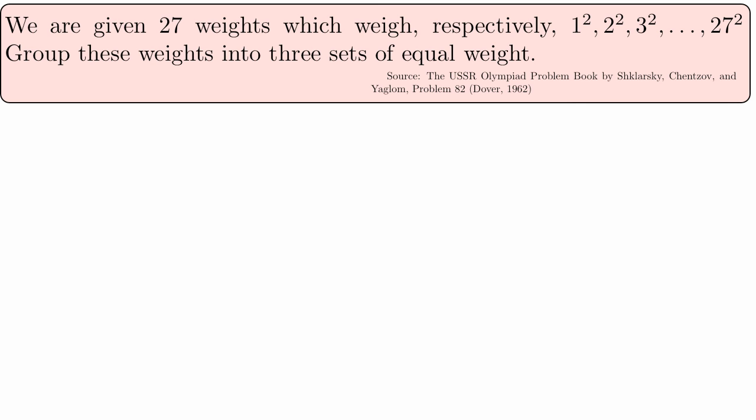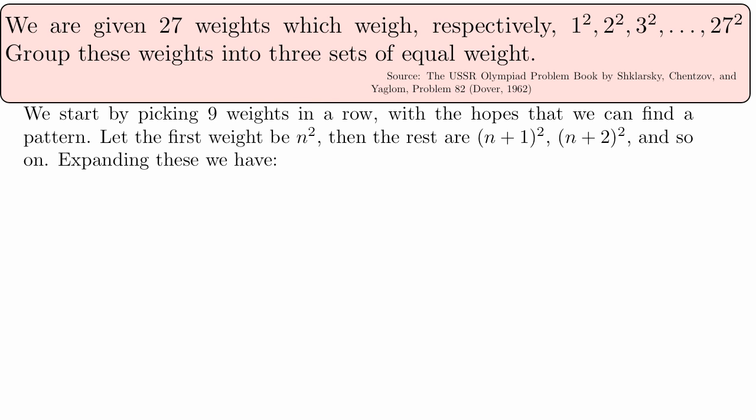Hopefully you tried a few ideas, maybe you even got it. But here's one solution. The basic strategy is we're going to try to simplify the problem by looking at only 9 weights in a row rather than 27 weights. Maybe we'll find a way to group those 9 weights into 3 equal sets, but maybe we'll also find some useful patterns that will help out. We're going to lower the complexity of the problem.